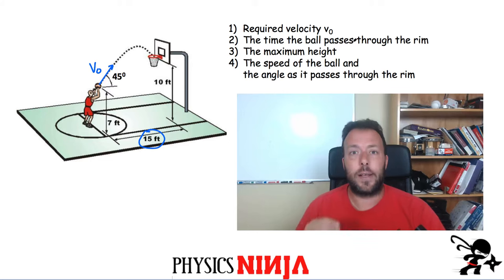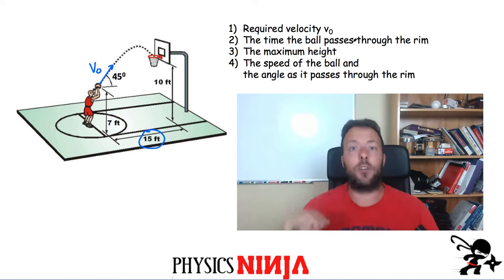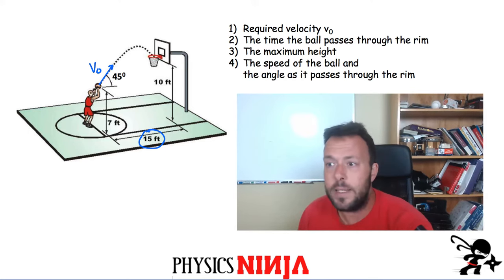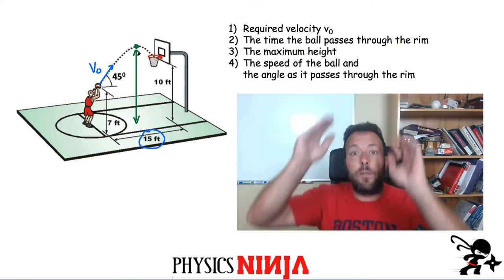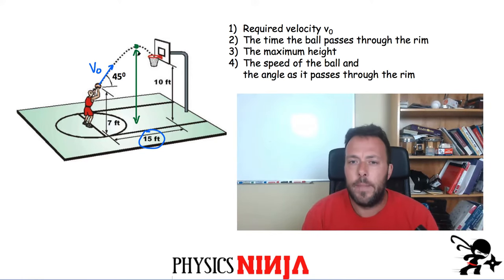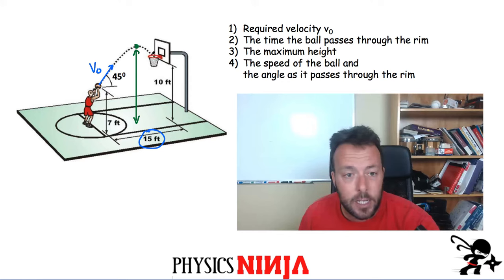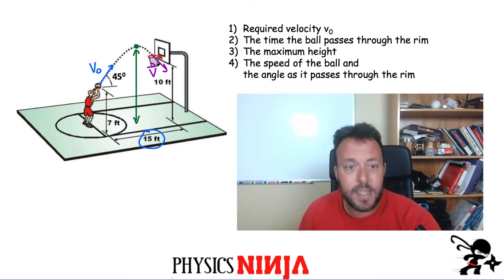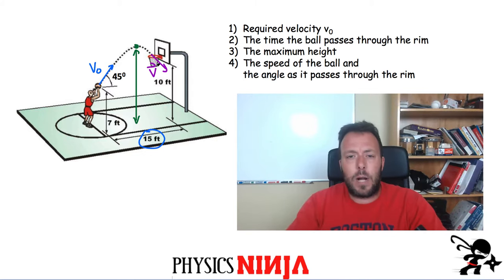Here are the four questions we need to solve: first, calculate the initial launch velocity v₀ at 45 degrees; second, how much time does the full trajectory take; third, what is the maximum height of the ball above the ground or above the launch point; and fourth, what is the speed of the ball as it passes through the hoop and the angle it makes going through the rim.